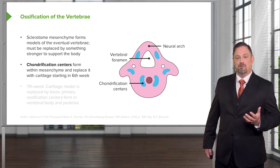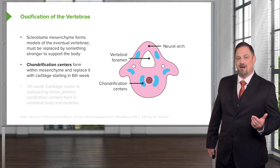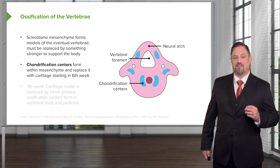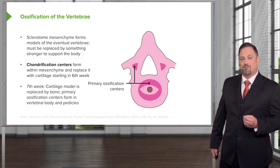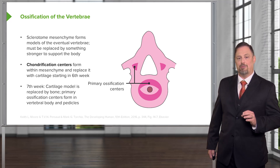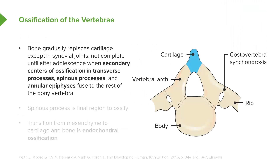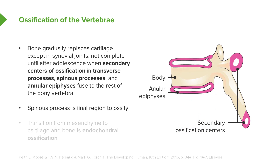Some animals like fish will often retain cartilage-only vertebrae. We start with mesenchyme, move to chondrification to create cartilage, and then once the cartilage is in place, ossification centers form that convert the cartilage into bone. Primary ossification centers in the vertebra form in the vertebral body and then the pedicles, and ossification spreads outward replacing cartilage with bone. The last portion to ossify is the spinous process. Secondary ossification centers — the annular epiphyses located on either side of the vertebral body, in the transverse processes, and the spinous process — join with the primary centers. Because the spinous process is the last portion to ossify, it can be affected by spina bifida.